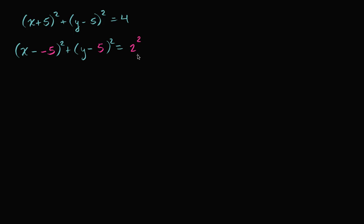I don't want you to just memorize this formula. I want you to appreciate that this formula comes straight out of the Pythagorean theorem — straight out of the distance formula, which itself comes out of the Pythagorean theorem. Remember, if you have some center, in this case the point negative five comma five, and you want to find all of the x's and y's that are two away from it...